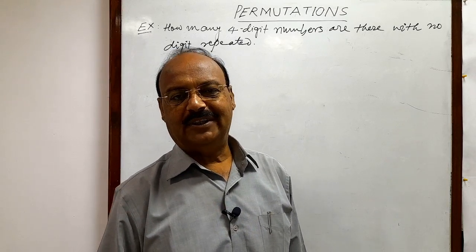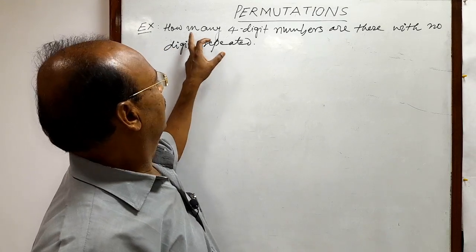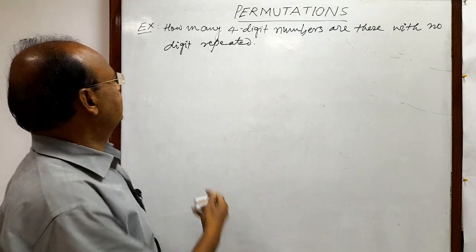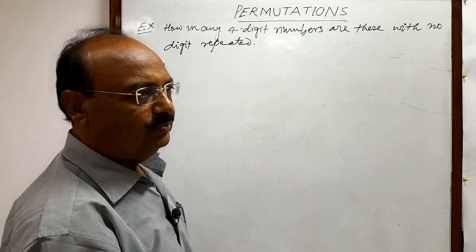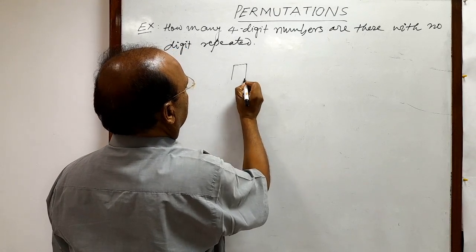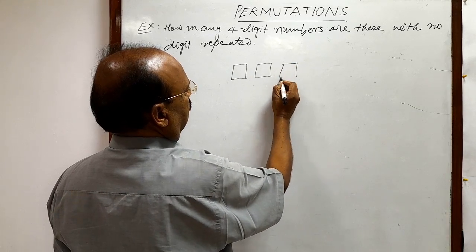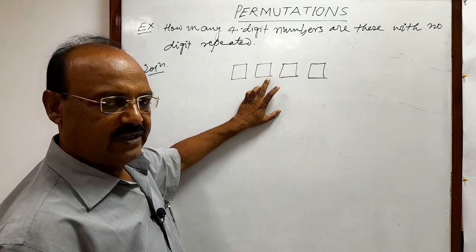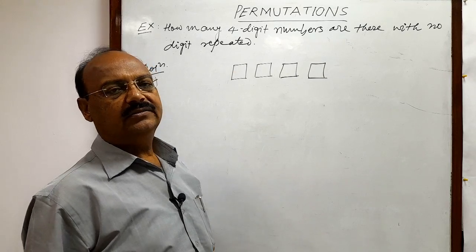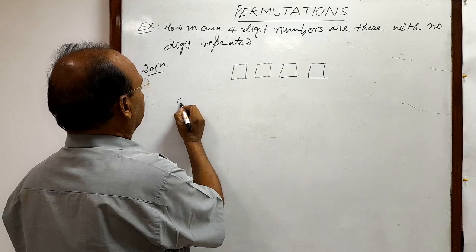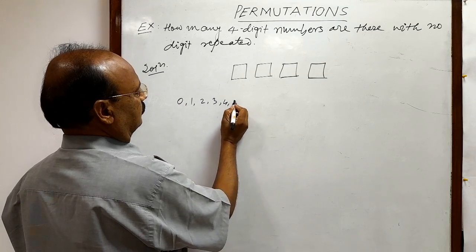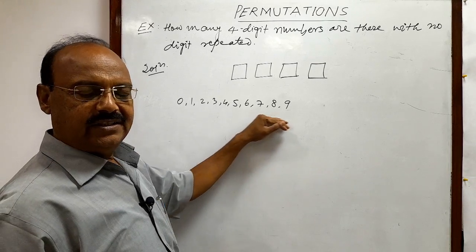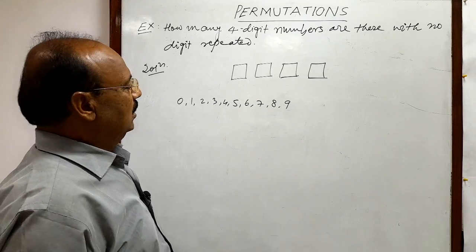Welcome students. Let us see a problem from the topic permutations. The question is: how many four-digit numbers are there with no digit repeated? We have to form a four-digit number. This is the digit at units place, this is tens place, this is hundreds place, and this is thousands place. Total number of digits are 10, from 0 to 9.